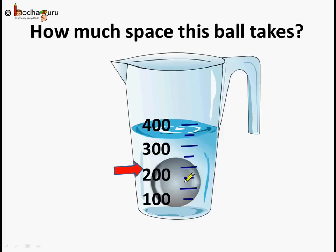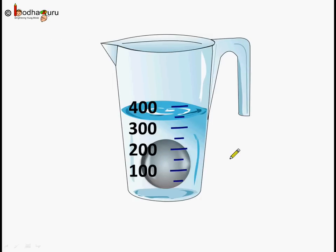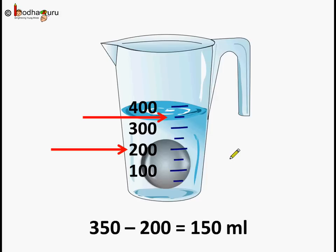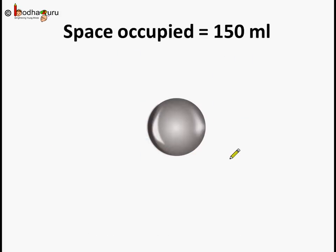We put the ball inside the measuring cup and what happened? The water level rises. And to what level did it rise? It rose till 350 ml. So the ball gets submerged into water and pushes the water level up because it needs some space for itself. So how much space does it take by pushing the water level up? See the water level rose to 350 ml. And initially it was 200 ml. So the ball takes 350 minus 200 which is equal to 150 ml. So we can say the space occupied by the ball is 150 ml.